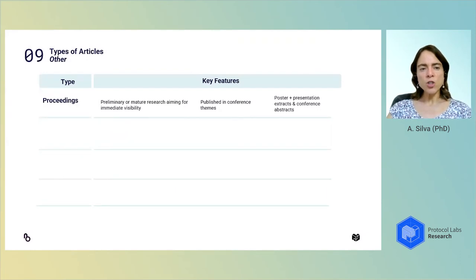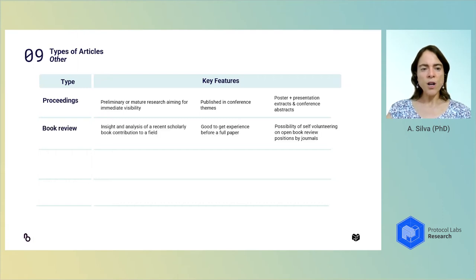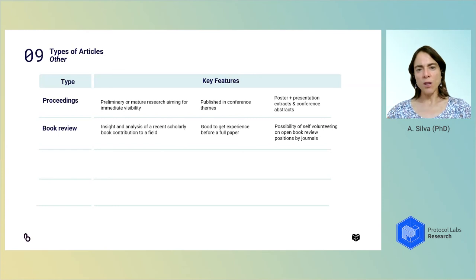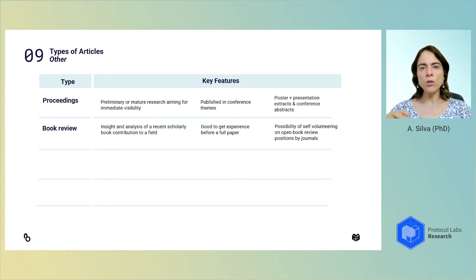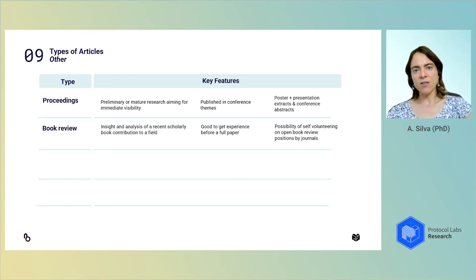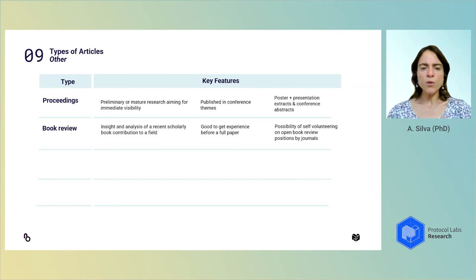Other types of articles beyond traditional and reviews include proceedings, which we've covered. There are also book reviews, which correspond to your own analysis of what a book contributes to a field. You can propose yourself to journals — you'll need to find which ones accept book reviews, as not all do. I would encourage you to send an exploratory email to the editor asking if they'd be willing to accept a book review submission. It's good experience before writing a full paper and could be a self-volunteering opportunity and training for later becoming a reviewer for that target journal.